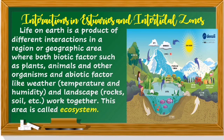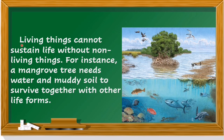This is an example of our ecosystem. Living things cannot sustain life without non-living things. For instance, a mangrove tree needs water and muddy soil to survive together with other life forms. This lesson will discuss the interactions of organisms to their physical environment, specifically the different activities that describe such interactions in estuaries and intertidal zones.